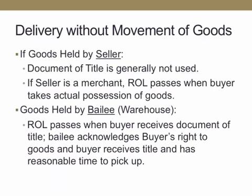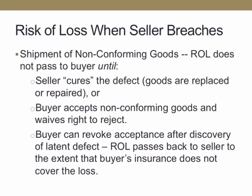If goods are held by a bailee — for example, a third-party warehouse — risk of loss passes when the buyers receive documents of title. The bailee acknowledges the buyer's right to the goods, and the buyer receives title and has a reasonable time to pick it up. In some cases, risk of loss passes when there is a breach of contract. If the seller breaches — for example, shipping non-conforming goods — then the risk of loss doesn't pass to the buyer until the seller cures the defect or the buyer accepts the non-conforming goods and waives the right to reject.